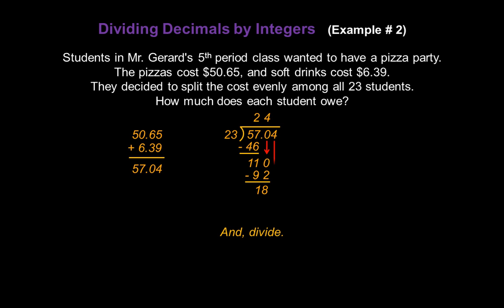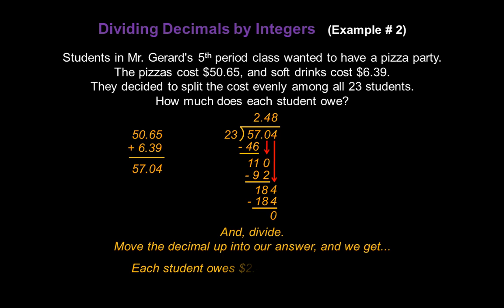And we bring down the last 4. 18 becomes 184, and how many times does 23 go into 184? 8 times. 23 times 8, in fact, is exactly 184, so we end up with a remainder of 0. Now we move the decimal up into our answer, just like that. And we get: Each student owes $2.48 for the pizza party.